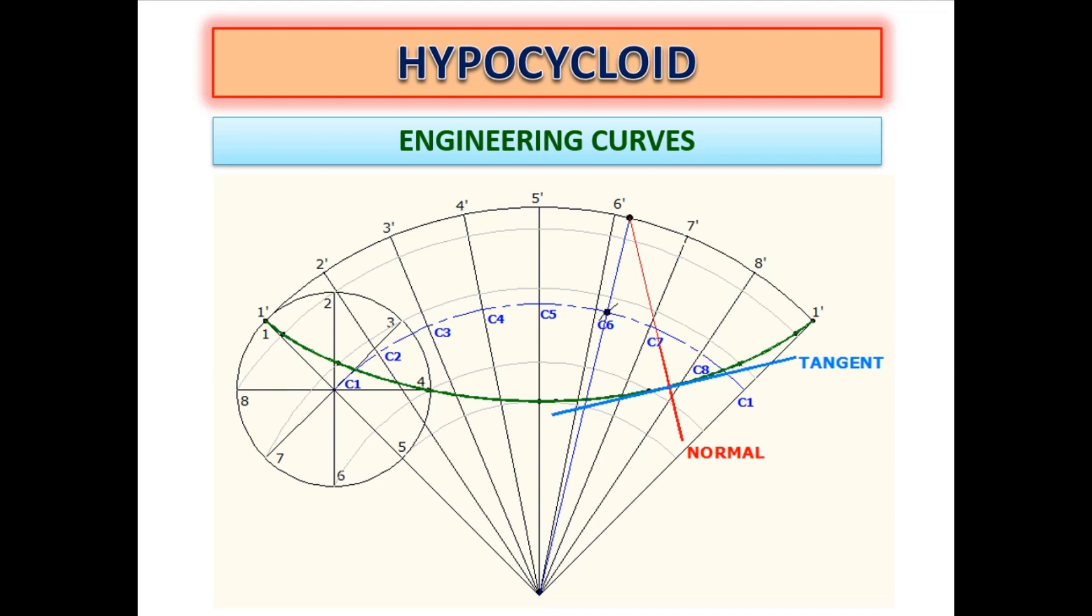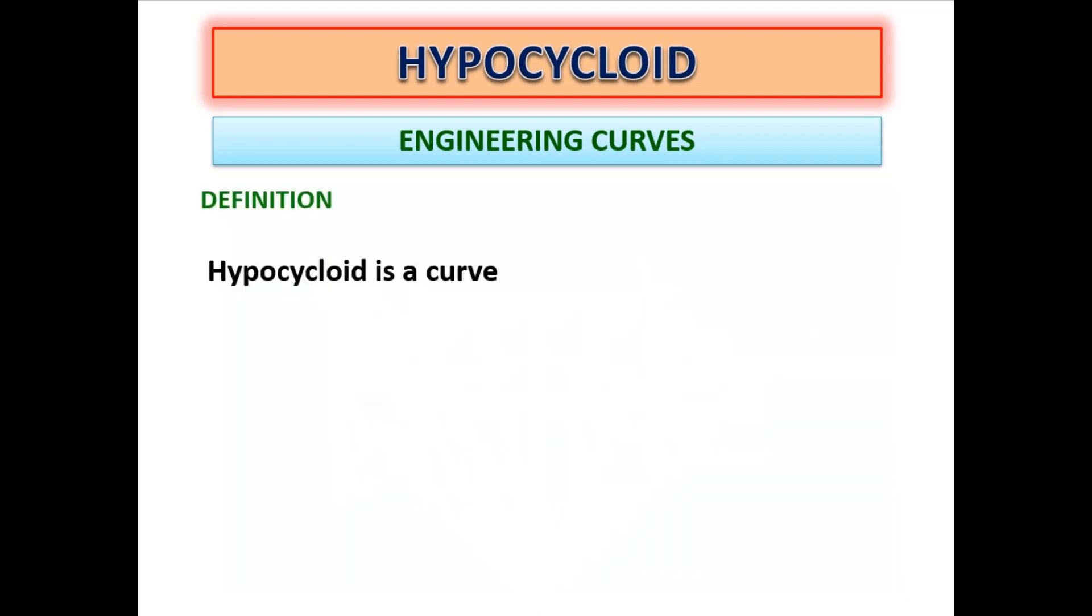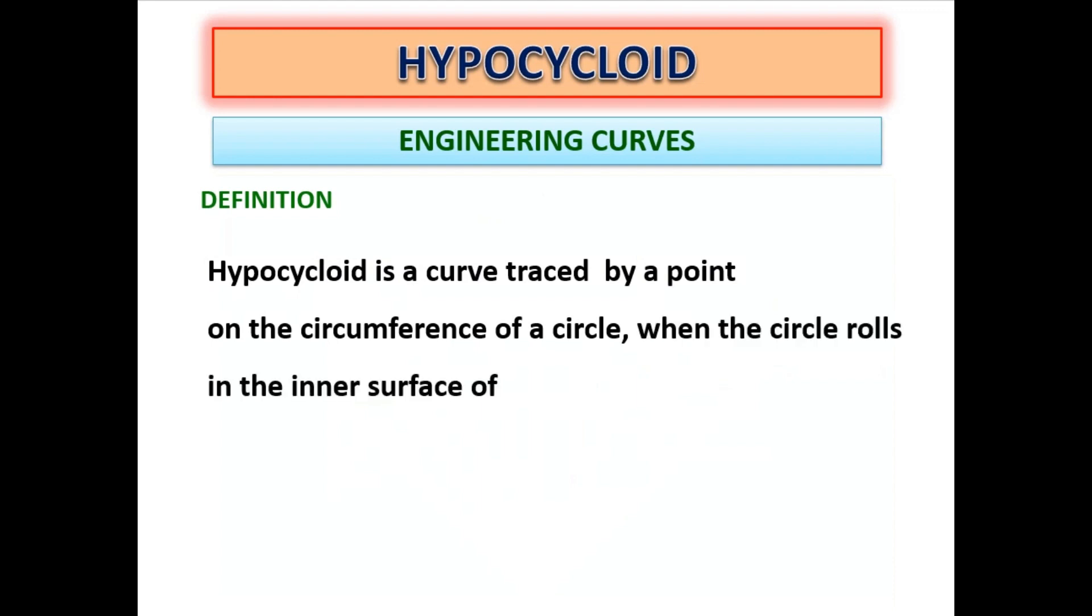This video explains the construction procedure of a hypocycloid. A hypocycloid is a curve traced by a point on the circumference of a circle when the circle rolls on the inner surface of another circle.